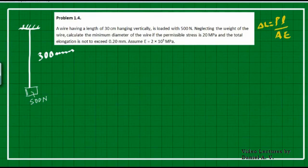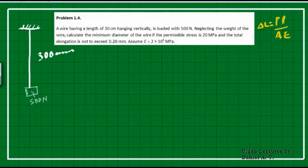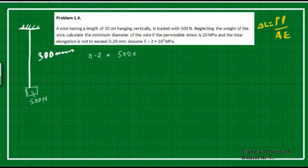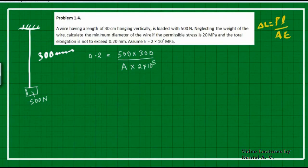The elongation needs to be restricted to 0.2 mm. We need to find what area is required to limit elongation to 0.2 mm. Using the formula, 0.2 mm equals 500 Newton times 300 mm divided by area A times 2 into 10 to the power 5 Newton per mm square. All units are consistent.